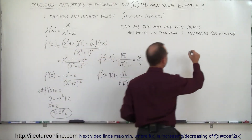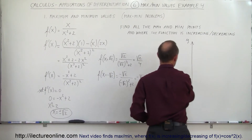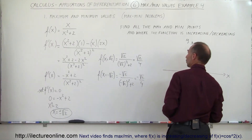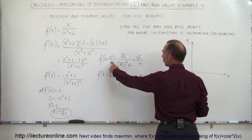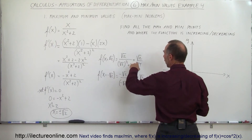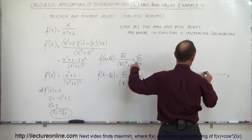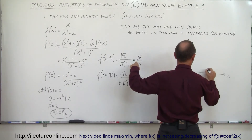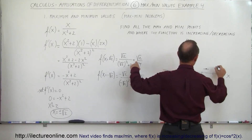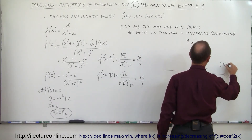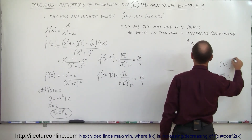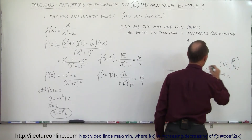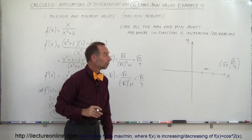Let's graph those. Here's our x axis. When x equals square root of 2, which is about 1.4, y will be a little bit less than one half. So right there — that's our first point where the slope is 0, the point square root of 2 comma square root of 2 over 4. That's our first critical point where the slope will be 0.